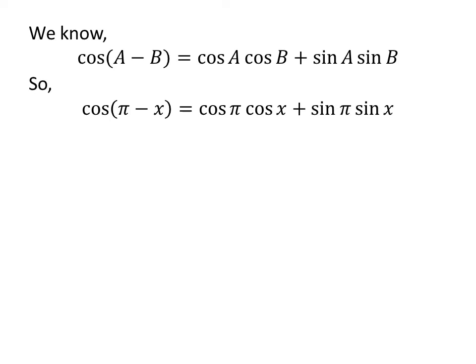Let us apply the above identity for cosine of pi minus x. Here, a is pi and b is x. So, cosine of pi minus x is equal to cosine of pi times cosine of x plus sine of pi times sine of x.